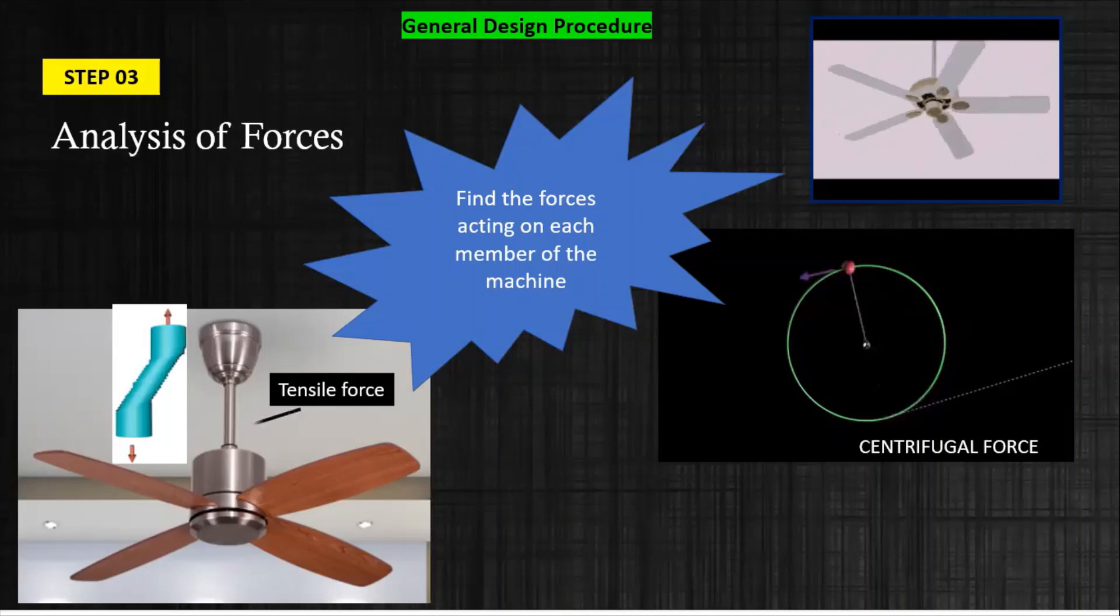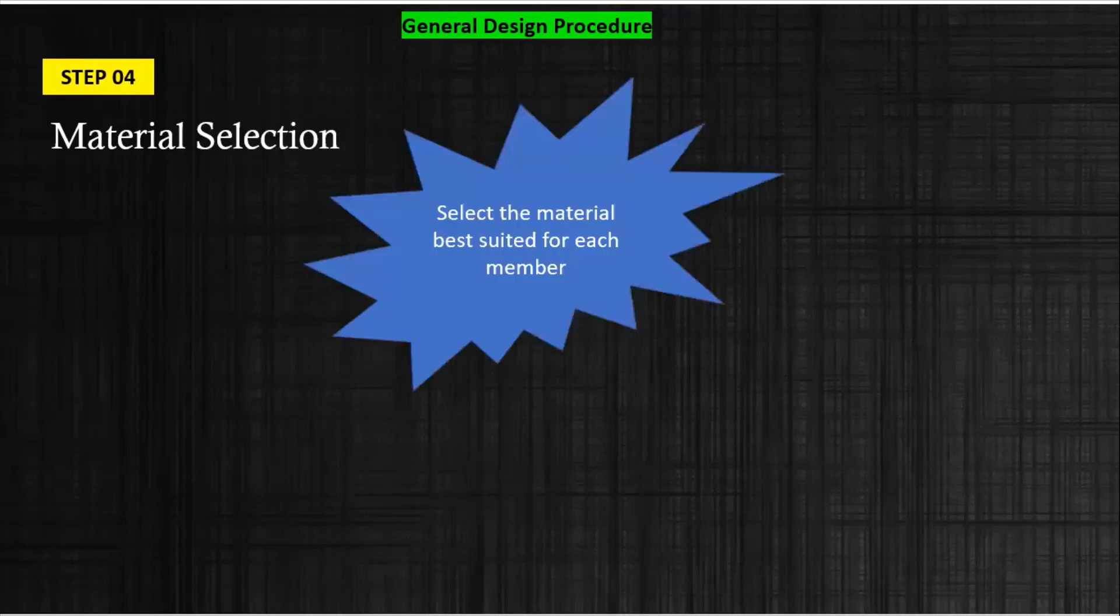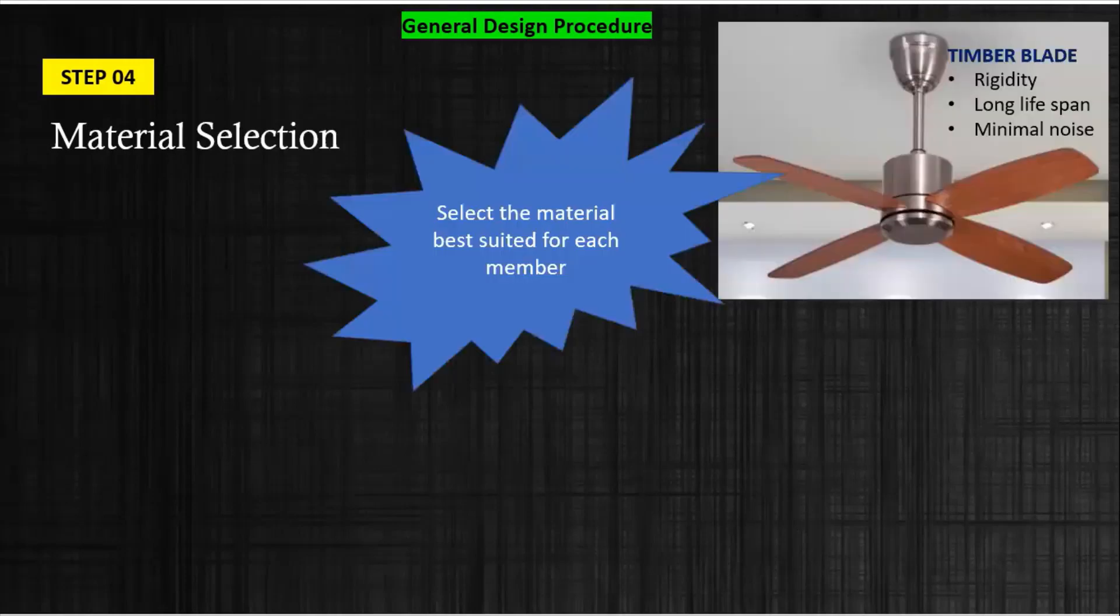Next, fourth is the material selection. This is a very important step in design procedure. What happens in this case? Selection of a material always depends upon the component shape, the type of forces, durability, its weight, strength, climate conditions, and most important is the cost.